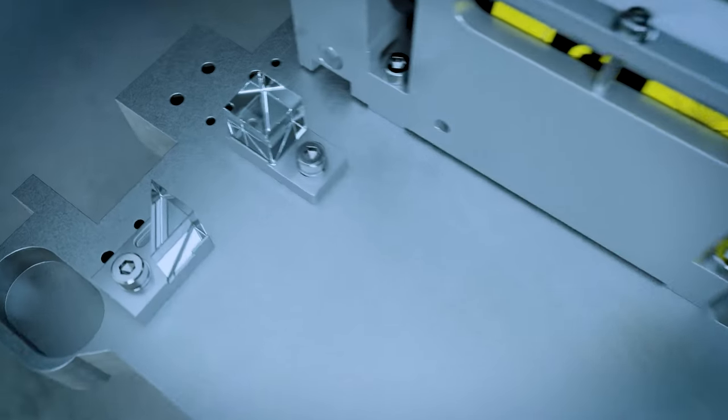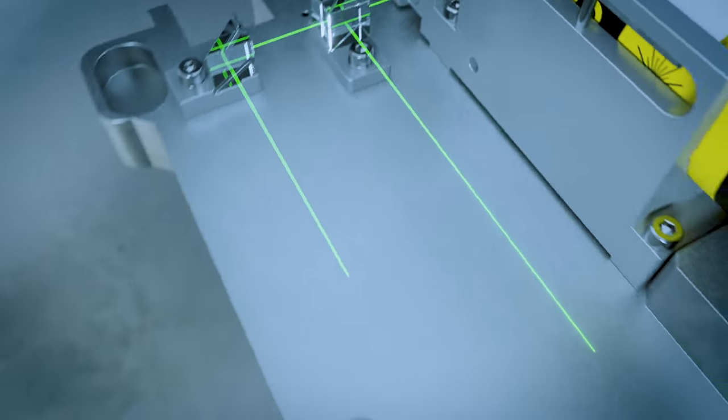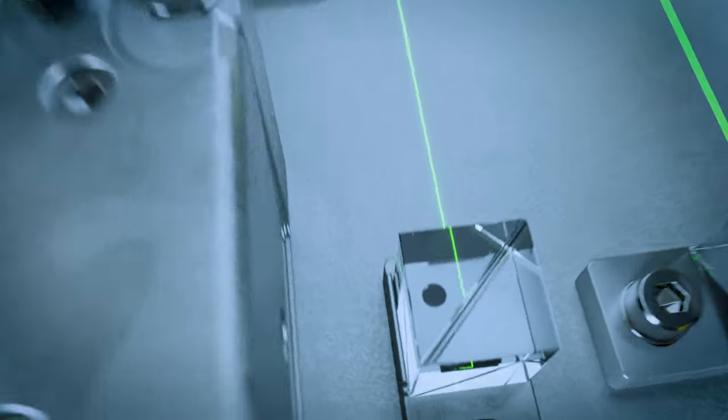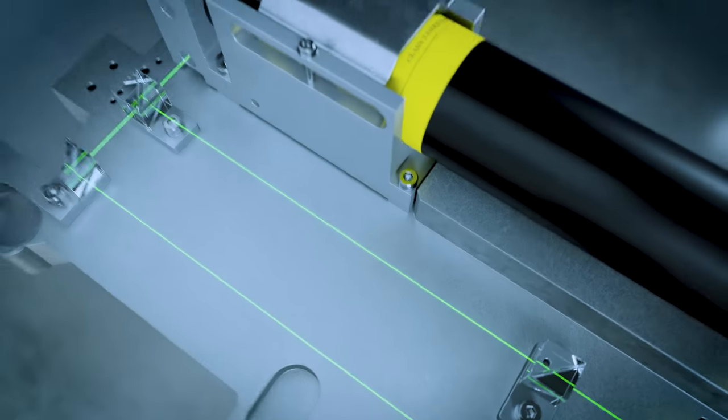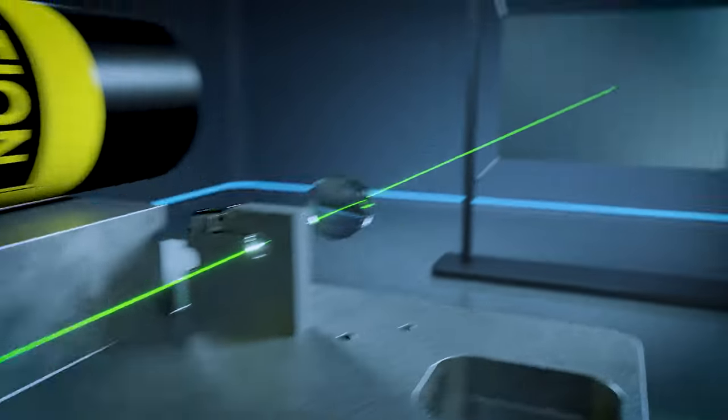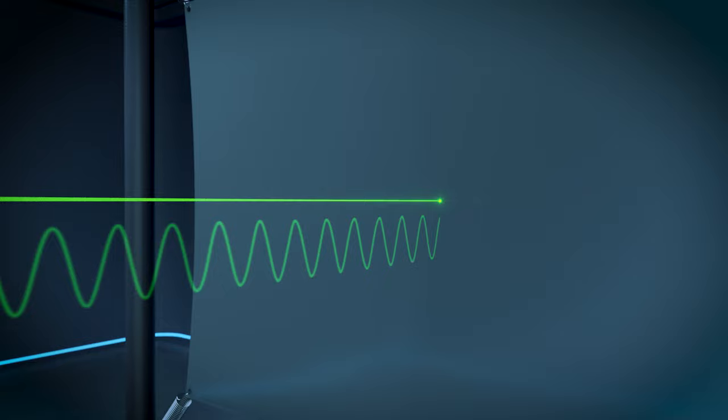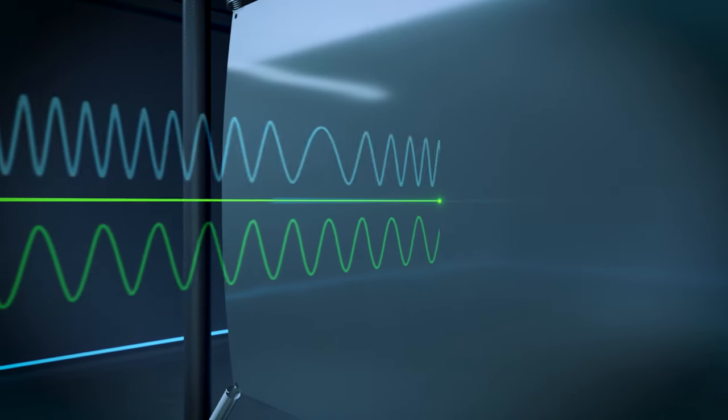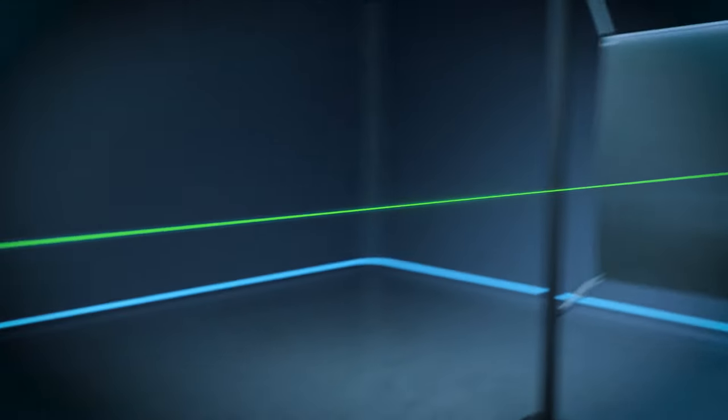To achieve this, the interferometer splits the light into two parts. The reference beam is pointed directly to the photodetector, while the measurement beam is incident on the test object, where light is scattered by the moving surface. Depending on velocity and displacement, the backscattered light is changed in frequency and phase.